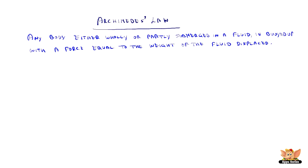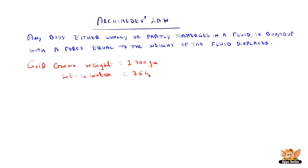Take it as an example and try to see how he did that. The gold crown's actual weight is 2700 grams, and the weight in water when it was suspended is 2560 grams. The loss of weight when suspended in water is the difference of these two, which is 140 grams. The buoyant effect of water gives rise to this loss of weight, and as per Archimedes' Law, the weight of the fluid displaced equals the buoyant effect. So this 140 grams is the weight of water the crown has displaced.